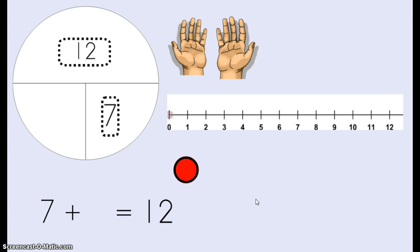This number sentence means the same thing. 7 plus what equals 12. 7 is an addend or a part. We have a missing addend or a missing part and we have our sum or our whole which is 12.